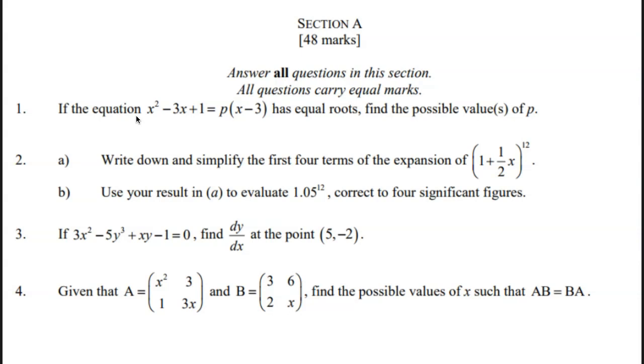The fourth one: Given that A equals the matrix with elements x squared, 3, 1, 3x, and matrix B equals the matrix with elements 3, 6, 2, x, find the possible values of x such that AB equals BA.